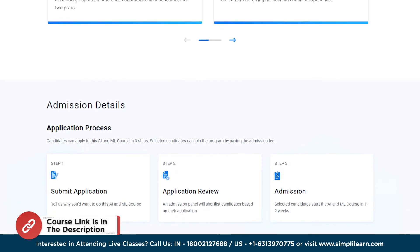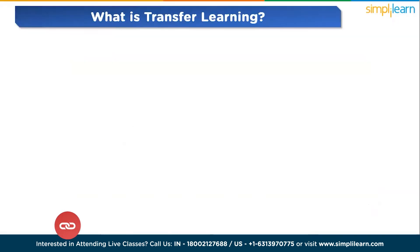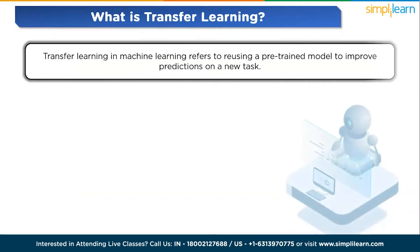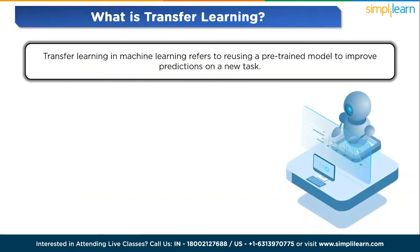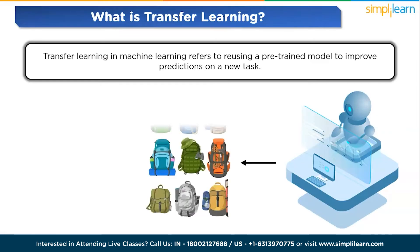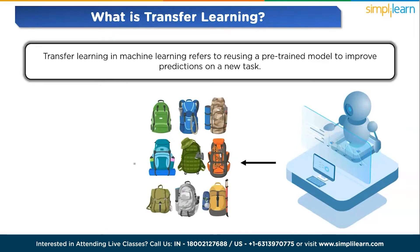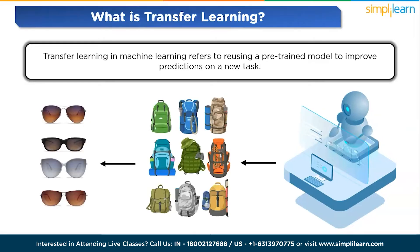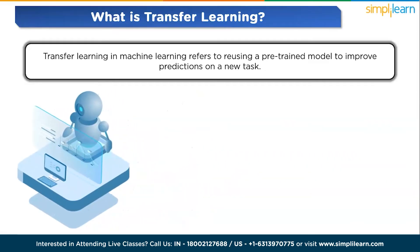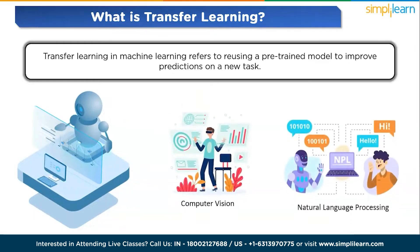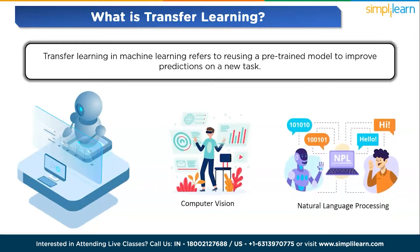So what is transfer learning? Transfer learning in machine learning refers to reusing a pre-trained model to improve prediction on a new task. It involves using knowledge gained from a previous assignment to tackle a related problem. For instance, a model trained to recognize backpacks can also be used to identify other objects like sunglasses. This approach is widely utilized in computer vision and natural language processing tasks, including sentiment analysis.